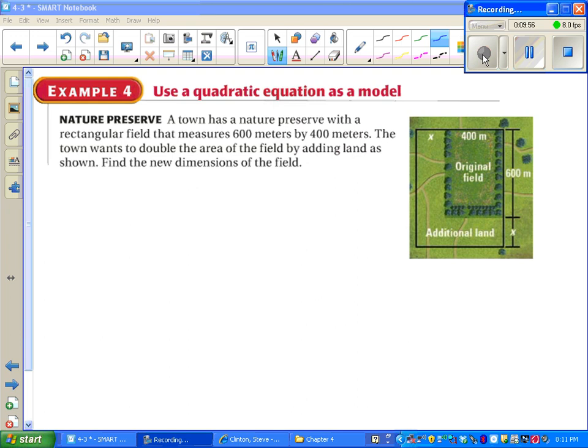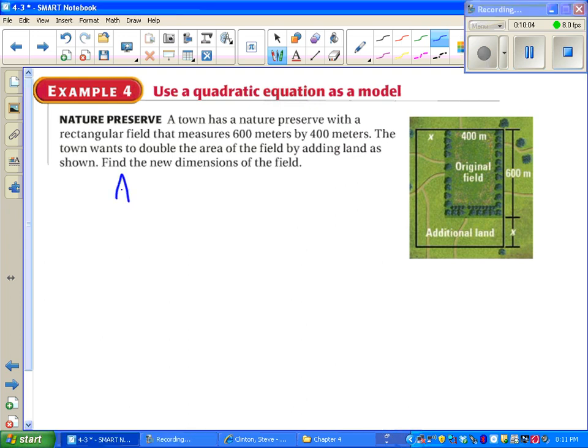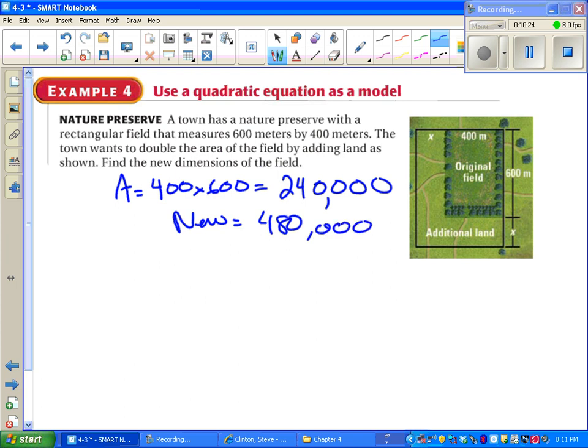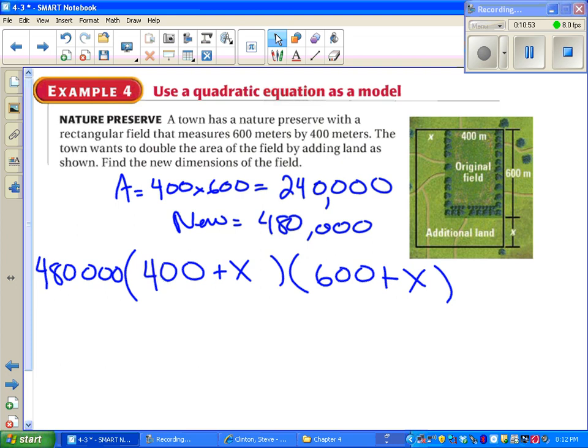Alright, we've got a 400 by 600 meter nature preserve and we want to double the area. Well, the original area we can figure out. It was 400 by 600, which is 240,000 meters squared. So that means we want our new area to be double that. So we want our new area to be 480,000. Get that by doubling 240,000. We also know the dimensions of our new nature preserve, kind of. It was originally 400 by 600. But both of those sides are going to be added onto by an equal amount, which we don't know yet, so we call it x. And altogether that should equal 480,000.